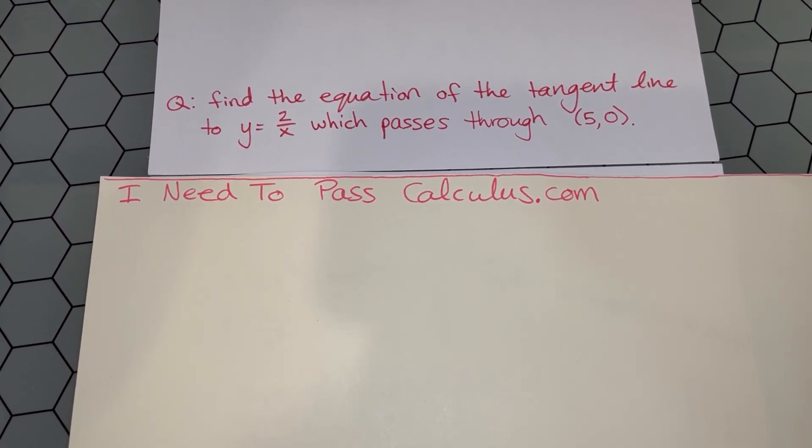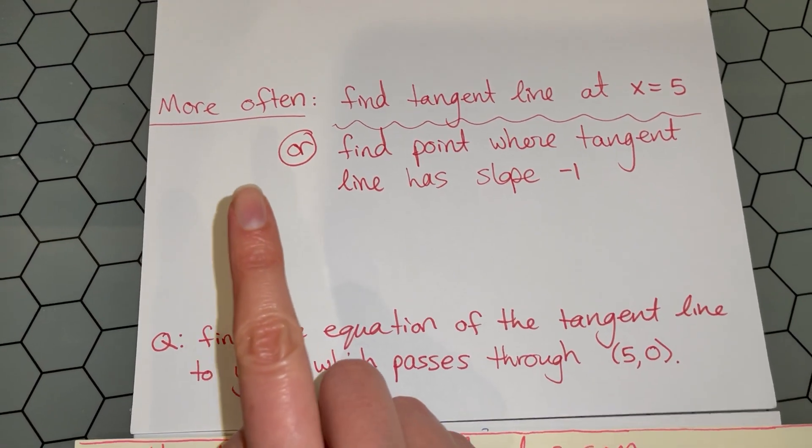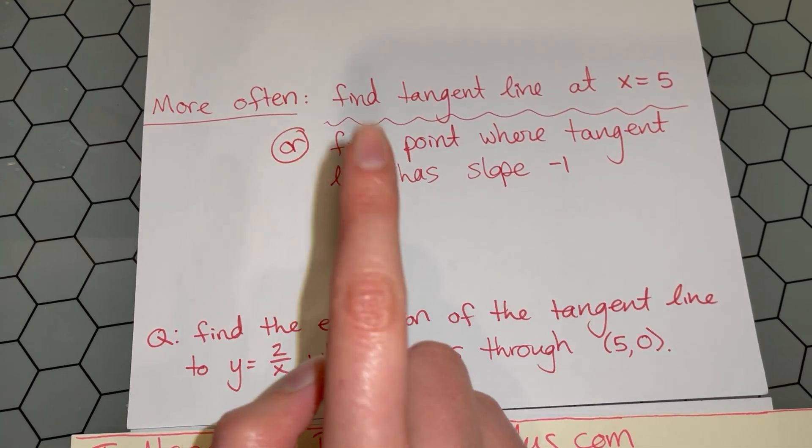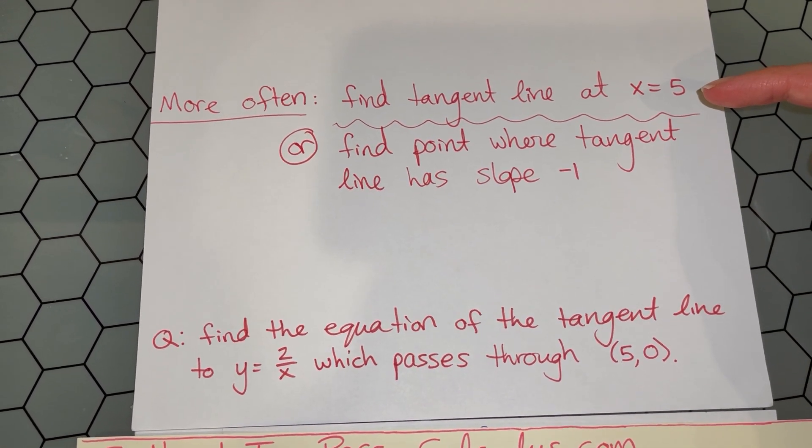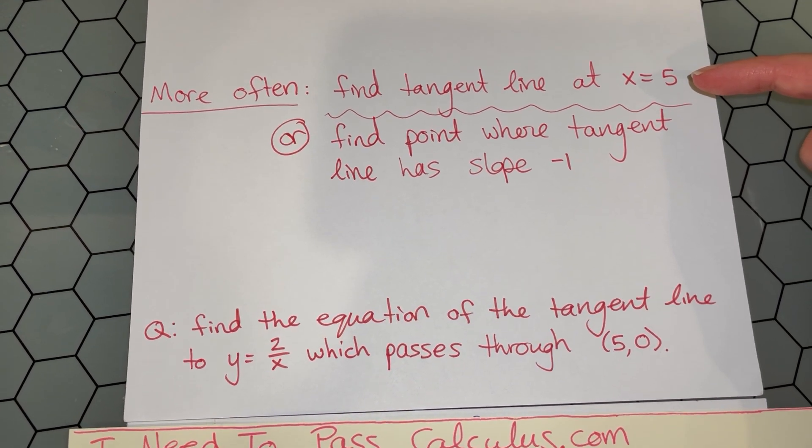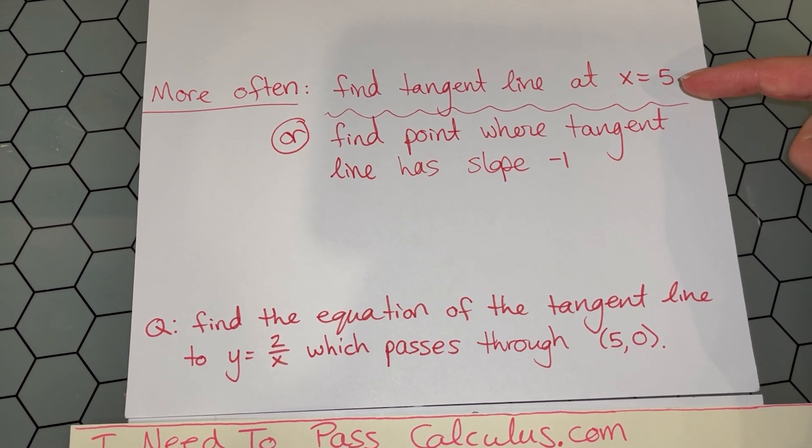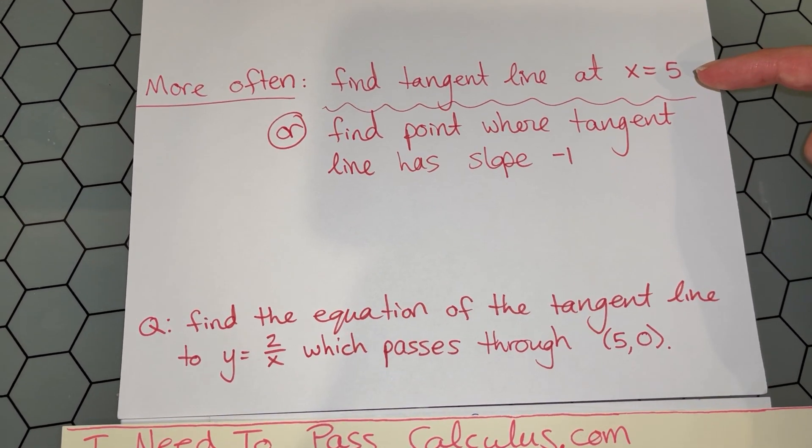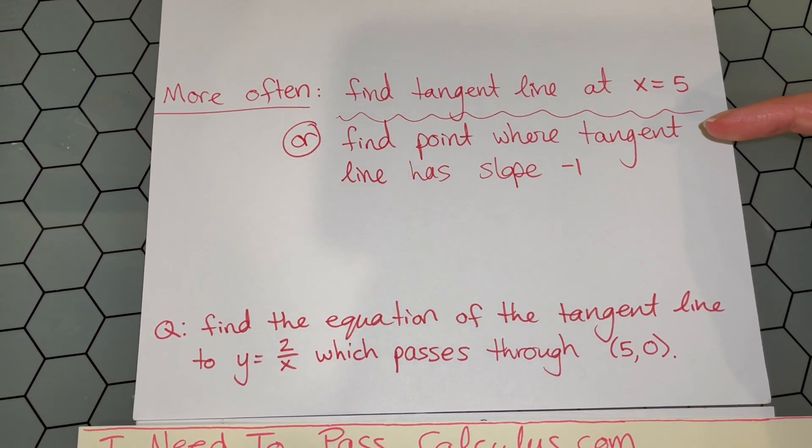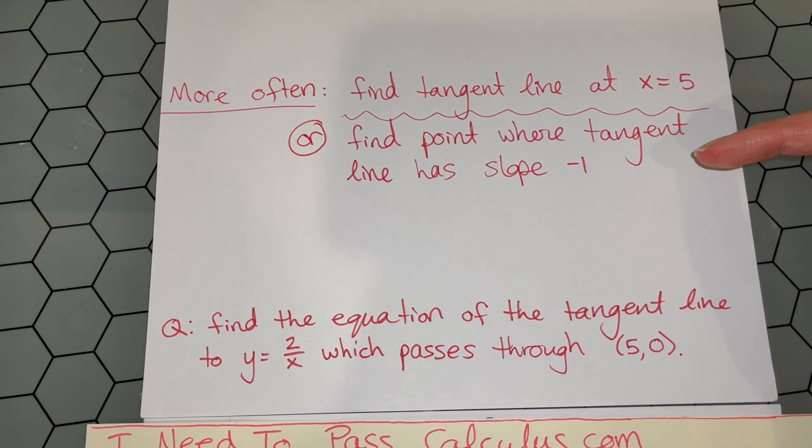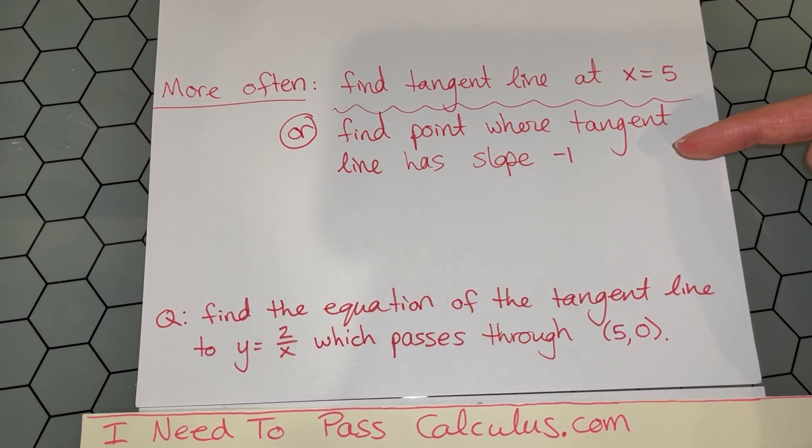This is a bit of a curveball tangent line question because much more often, tangent line problems are one of two types. Either they tell you the x location where you're supposed to build the tangent line. In those cases, you take the derivative, plug in that x value to find the slope of the tangent line, and then finish finding the tangent line equation.